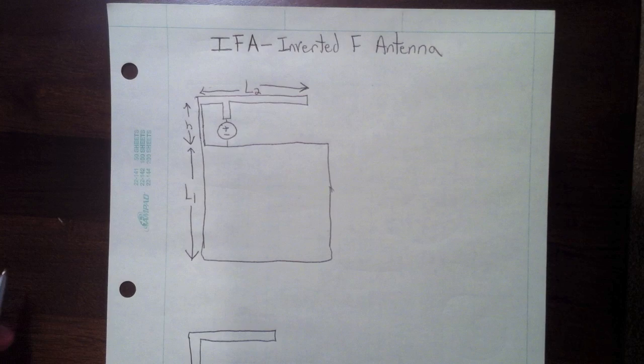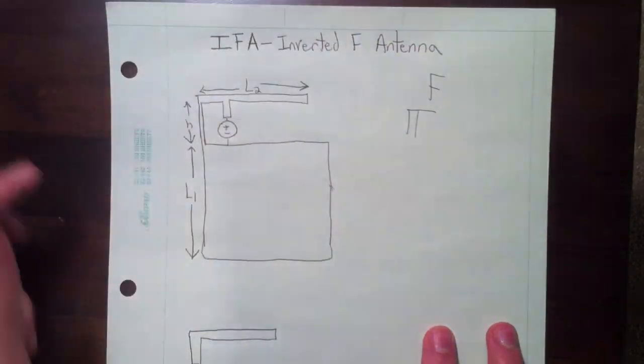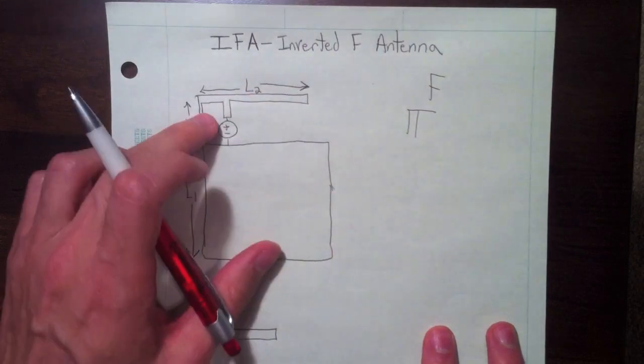First, it's called an inverted F. Think about an F if you flipped it over and turned it on its side, you could change it into this shape.